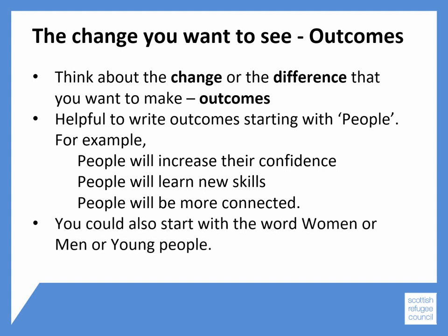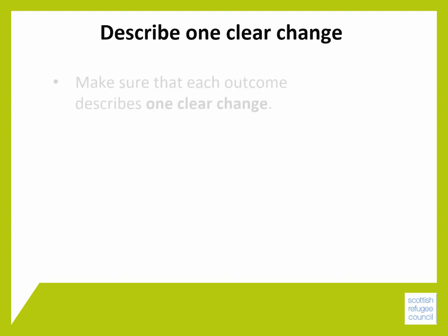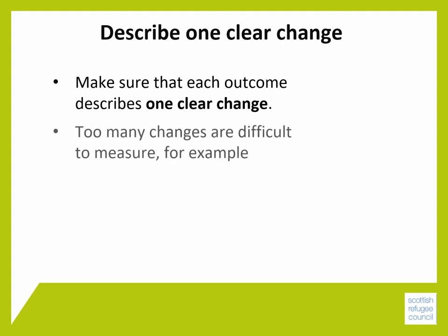You could also start with the word 'women,' 'men,' or 'young people.' The most important thing is to keep your outcomes simple and clear. When writing your outcomes, make sure that each outcome describes one clear change — too many changes are difficult to measure.